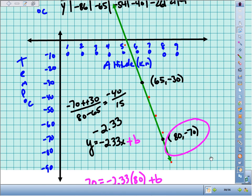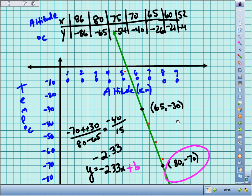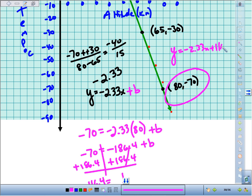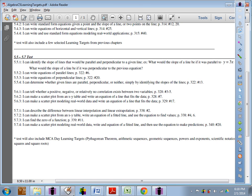So our final answer, our final equation, would be y equals negative 2.33x plus 116.4. Now answers will vary a little bit. Let's see how we did. If we go to the answers for this section 5.6, this was number 17, I believe. Let's see how we did.